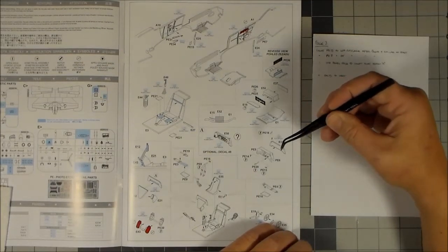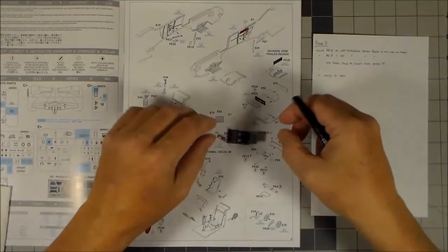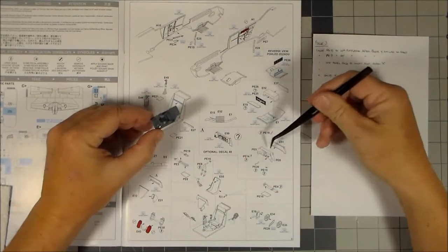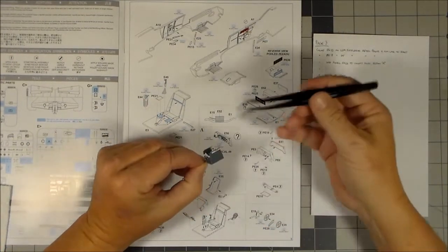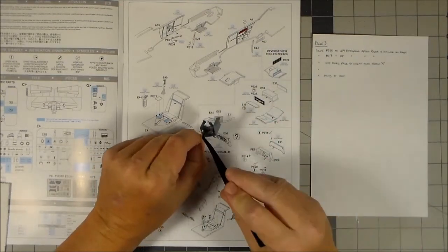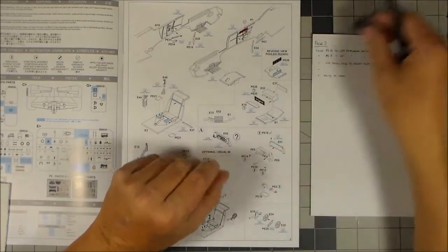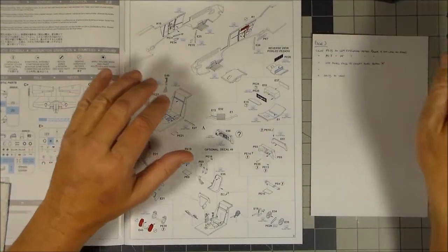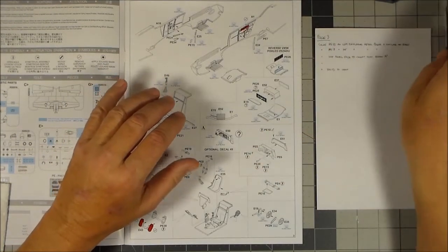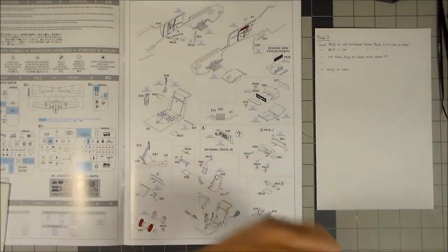The only other part I have to do, I made my note to myself, I will have to do the PE parts for the instrument panel once this has all been painted. So I'll pre-assemble these photo etch parts here and then carefully install it onto this instrument panel.